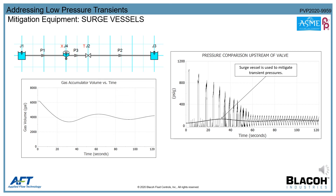The second most common method for mitigating low pressure transients is through the use of a surge vessel. Surge vessels have advantages in that they allow the system to remain closed and can mitigate high pressure transients as well. In the cavitation example, the surge vessel attenuates the high pressure transient wave, and as the flow reverses, it sends fluid into the piping, preventing the system from going into a vacuum state.